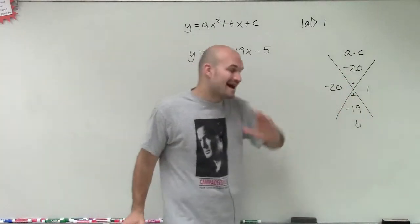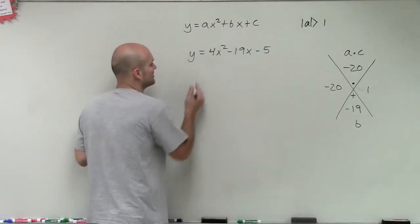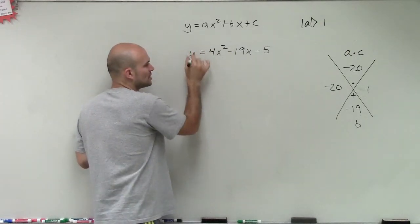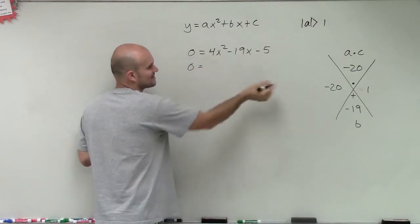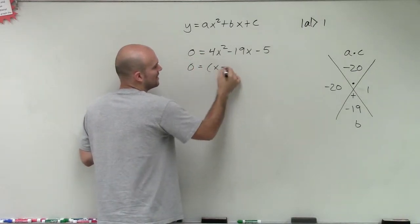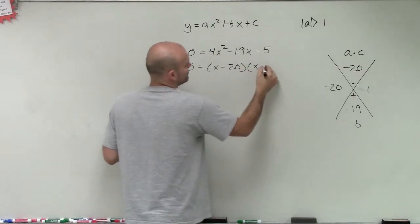Now that we've figured these two out, we cannot write this as factored form yet. This is the biggest mistake students make. Let's change our y to 0 since we're solving it. The biggest mistake students make is they say, oh, those are your two factors, x minus 20 and x plus 1.